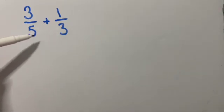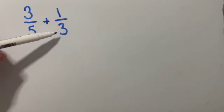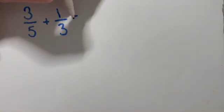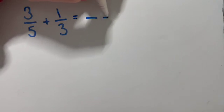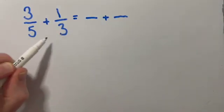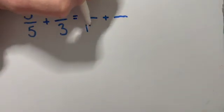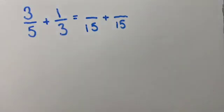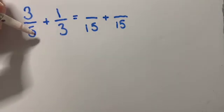So all we do, we find the lowest common multiple of these two because we need to make the denominators the same. So once I've worked out the lowest common multiple of three and five, which is 15, I go back to my original fractions and I check what I had to multiply by.